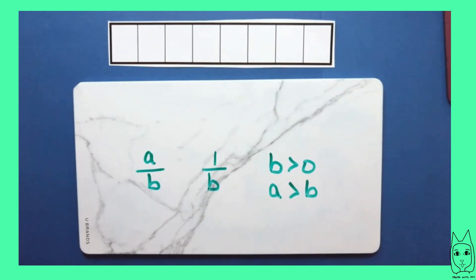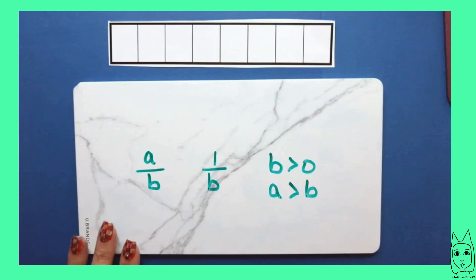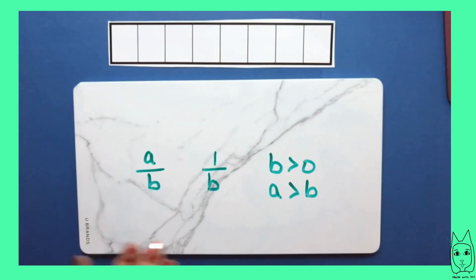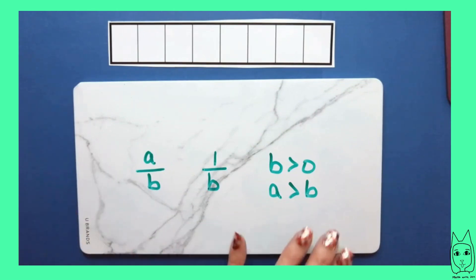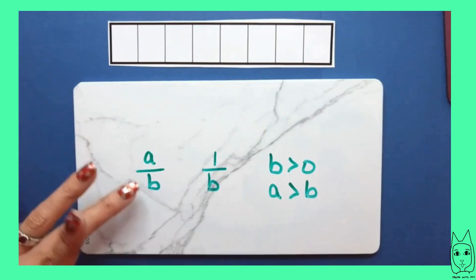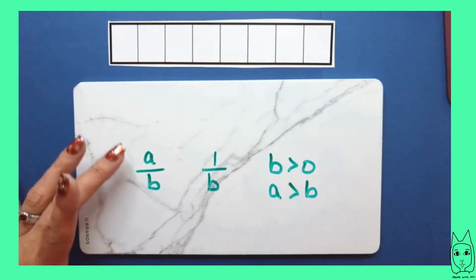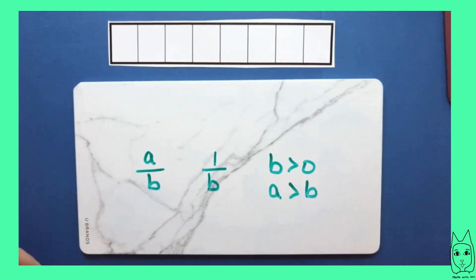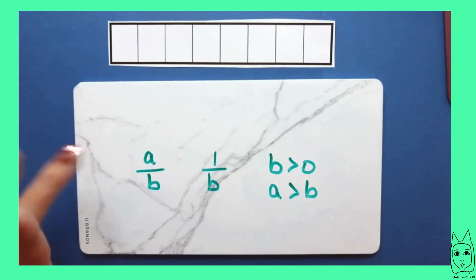Let's talk about what each of these parts mean — don't freak out, don't leave. We're going to talk about what these letters are standing for in the standard. They're using letters because you're not just going to be looking at one single fraction; you're going to be looking at different fractions.